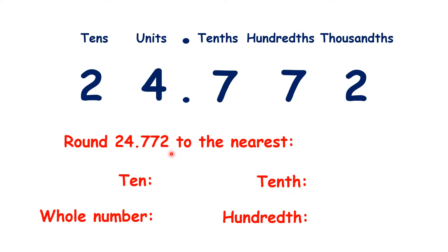Here we have the decimal number 24.772, and we need to round this number to the nearest 10, to the nearest whole number, to the nearest tenth, and to the nearest hundredth. We have our place values labelled, so you will easily be able to see what we are doing here.